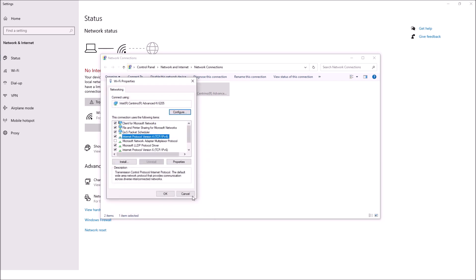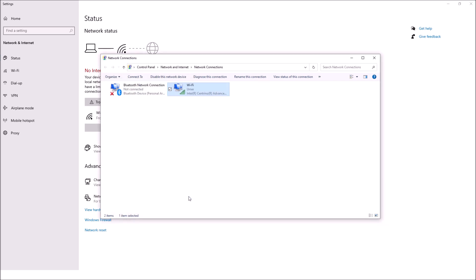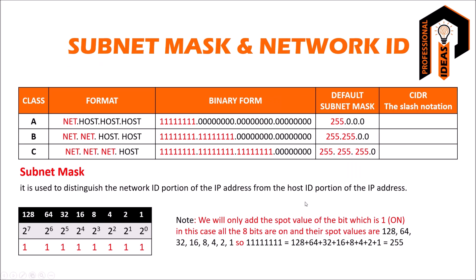Classless Inter-Domain Routing (CIDR), also called slash notation: Class A is /8, meaning the Class A network has 8 bits for the network segment. Class B is /16, meaning 16 bits for the network segment. Class C is /24, meaning 24 bits for the network segment.